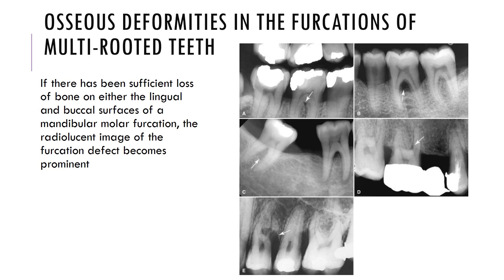Osseous deformities in the furcations of multi-rooted teeth are shown in images A to E, demonstrating different amounts of bone loss with furcation involvement. If there has been sufficient loss of bone on either the buccal or lingual surfaces of the mandibular molar furcation, the radiolucent image of the furcation defects becomes very prominent, as clearly seen in image B.